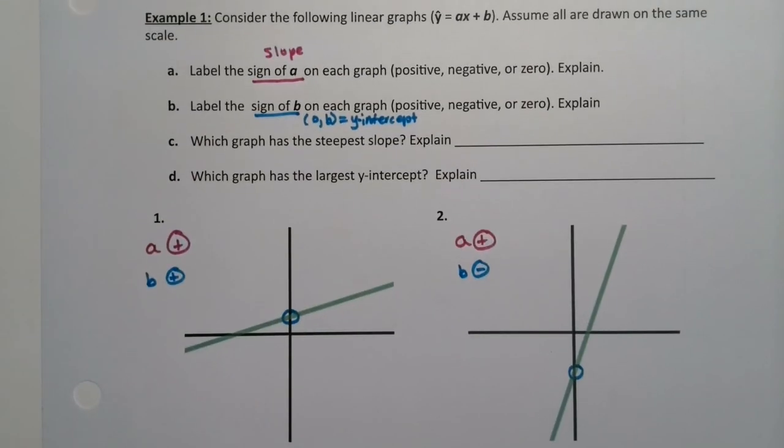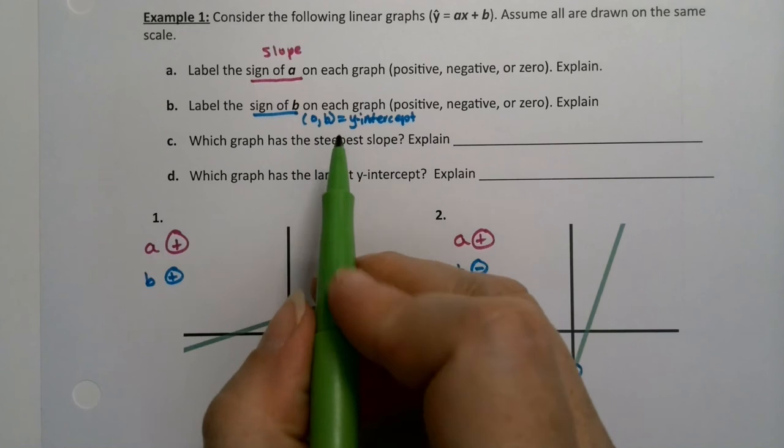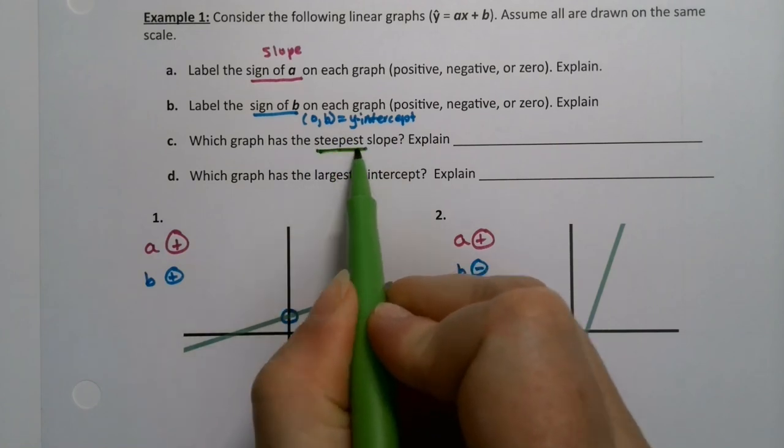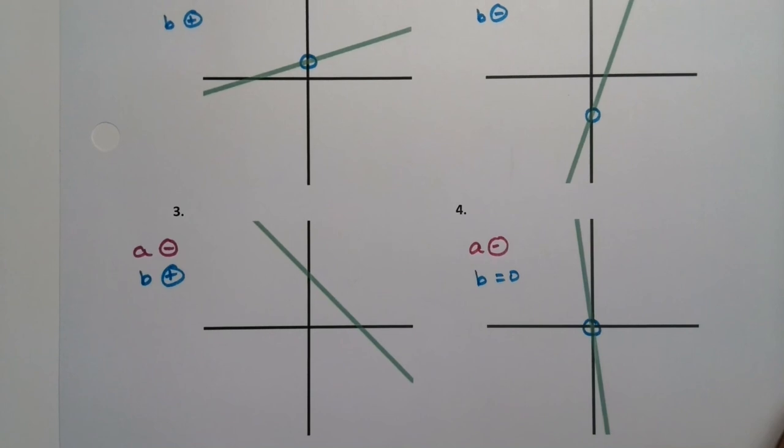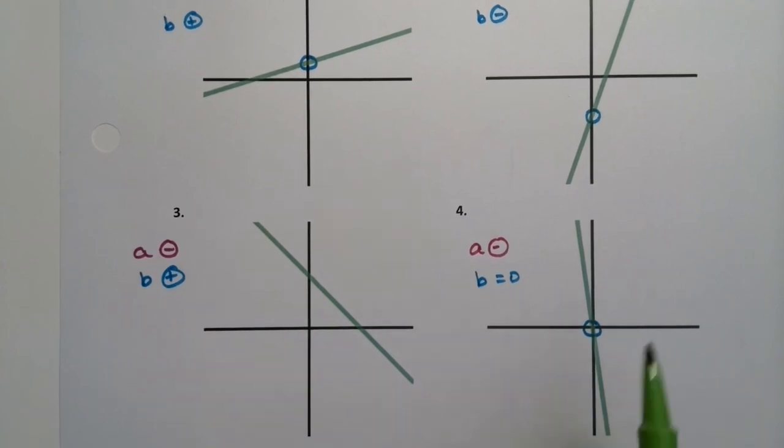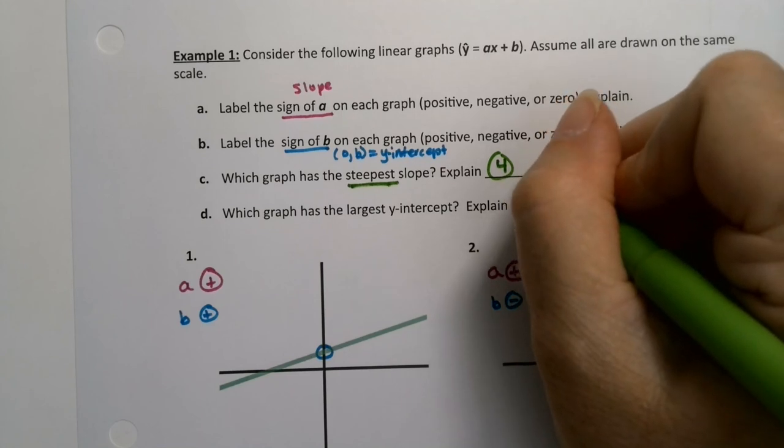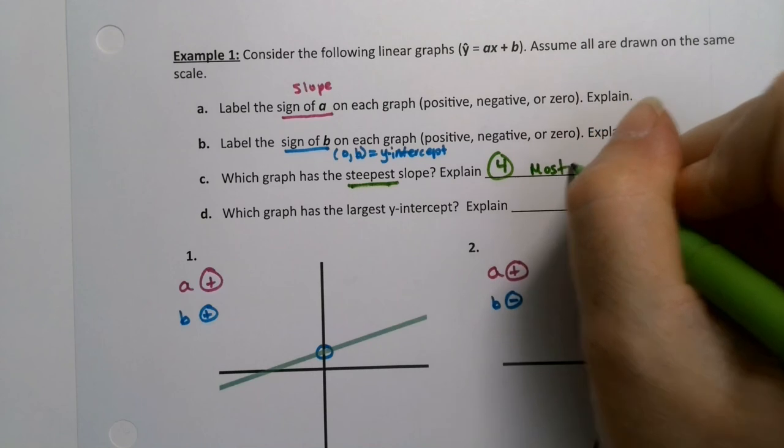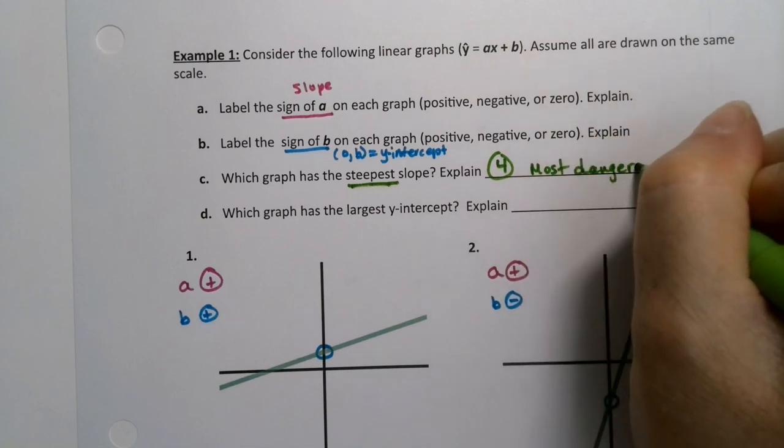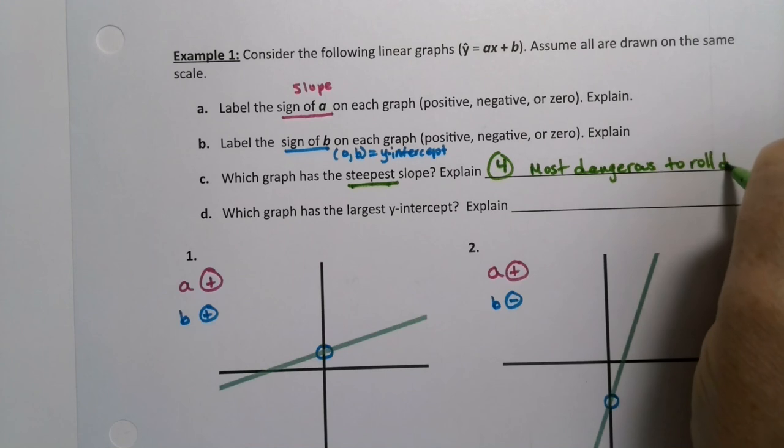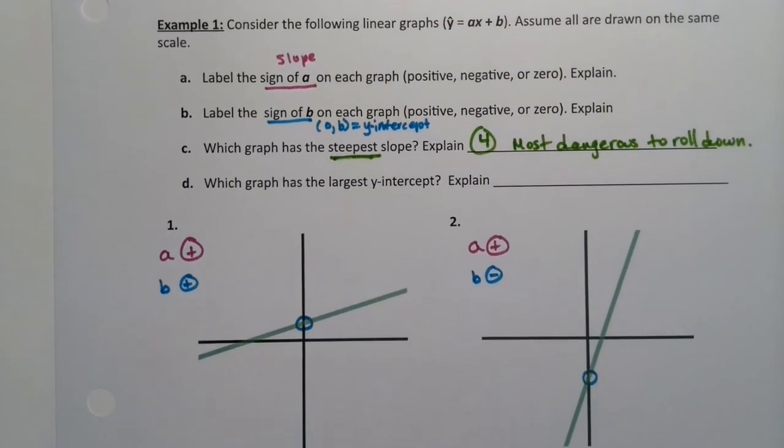Now which of these graphs has the steepest slope? The steepest means you would least like to climb it, unless you're a mountain climber, or it'd be the most dangerous to roll down. Looking at the four graphs, which one's the most dangerous? It's number four. That is the steepest graph. Since all of them are on the same scale, that's the most scary. So it's number four - it has, well, it's the most dangerous to roll down. You'd really hurt yourself on four.